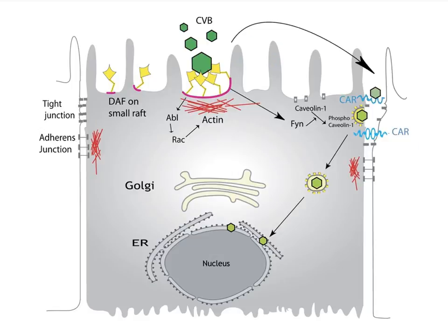So virus binding to DAF loosens up the tight junction so the virus can move into it and bind to CAR. Isn't that brilliant? The receptor is inaccessible, so the virus has evolved to bind a cell surface molecule whose engagement loosens the tight junction — that's why Coxsackieviruses need two receptors.